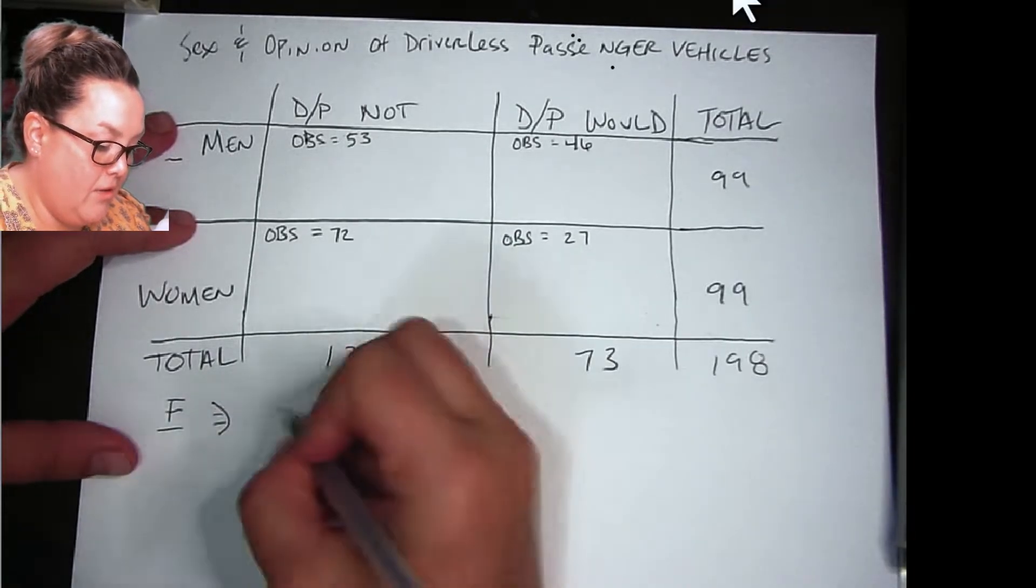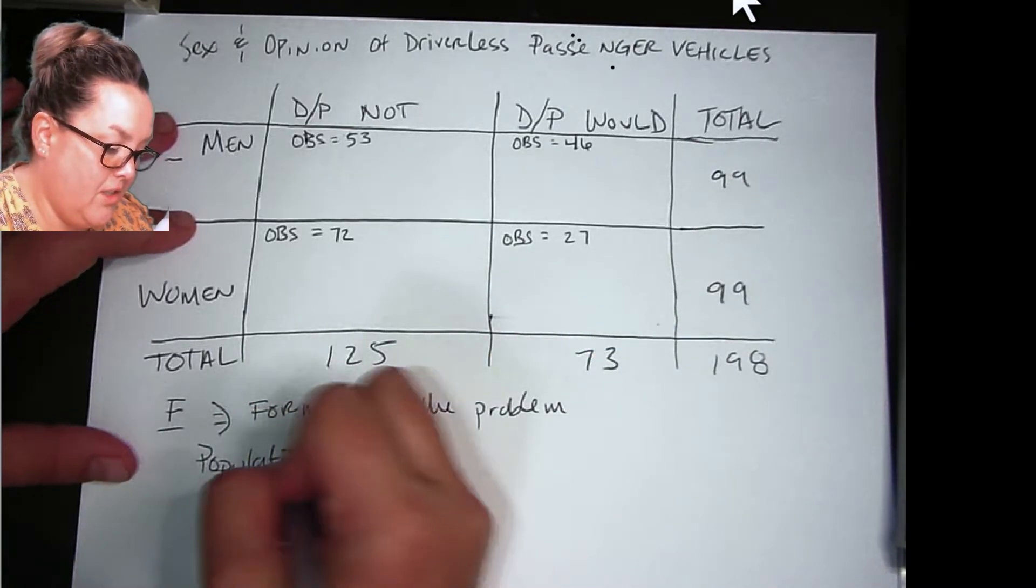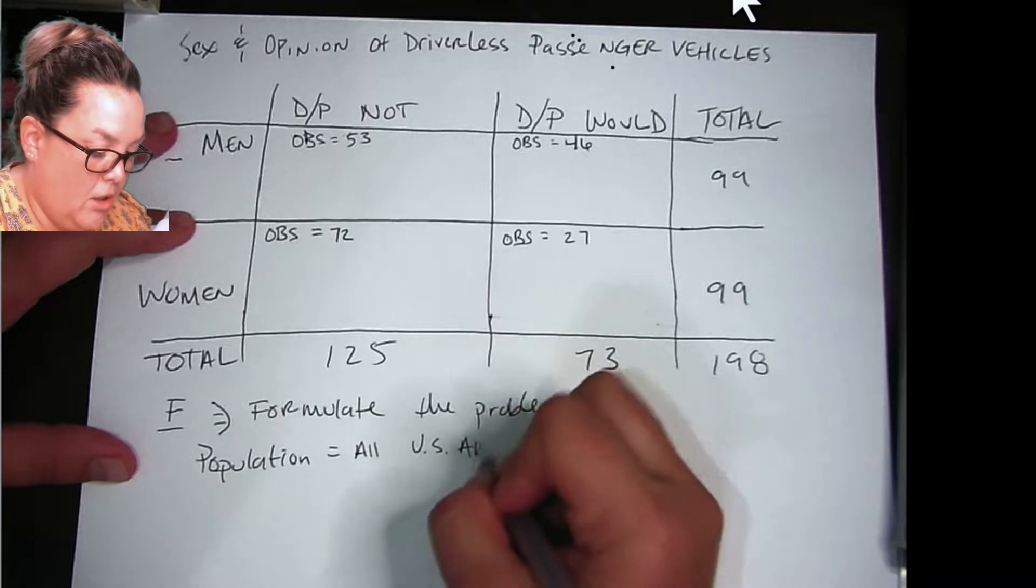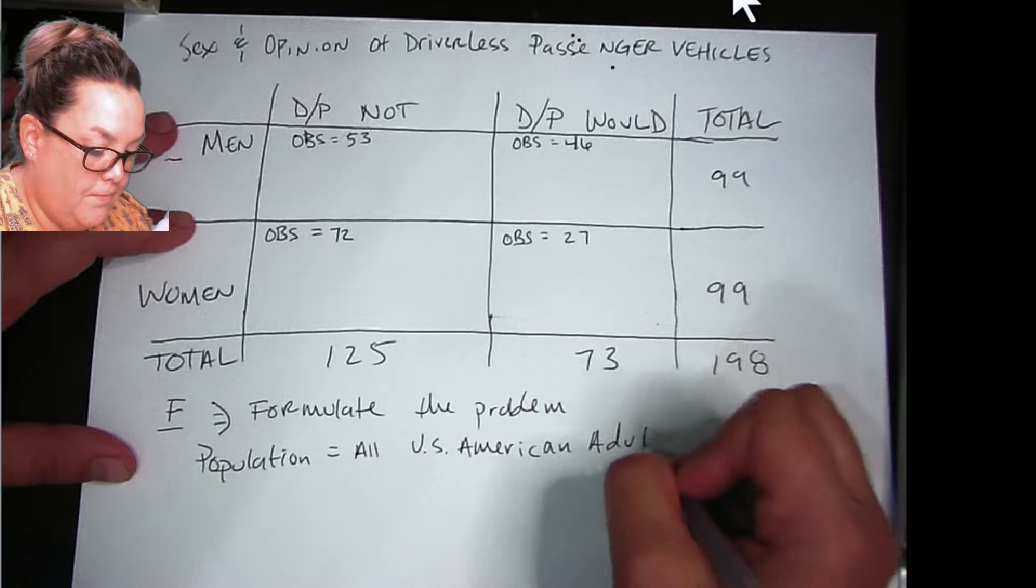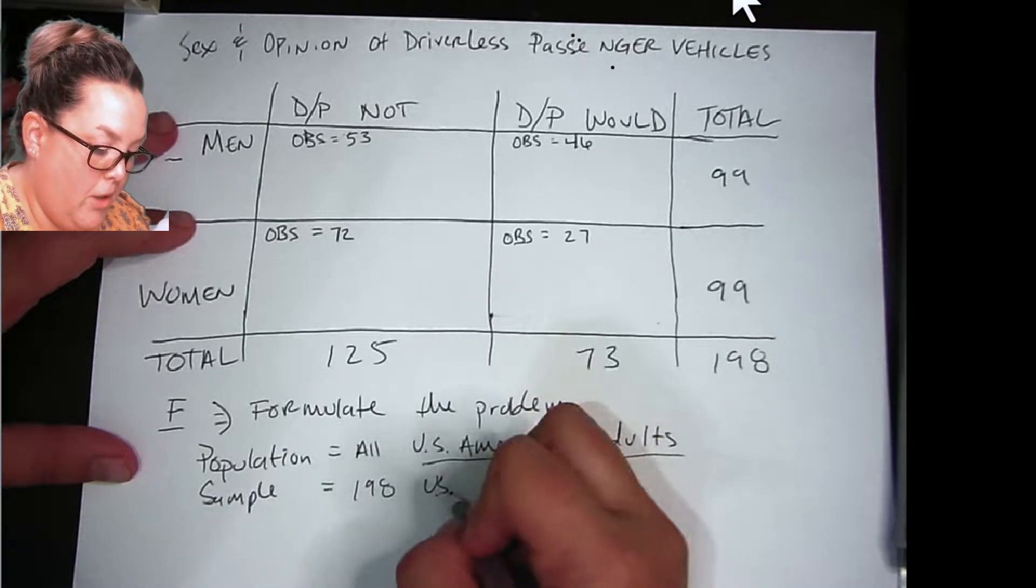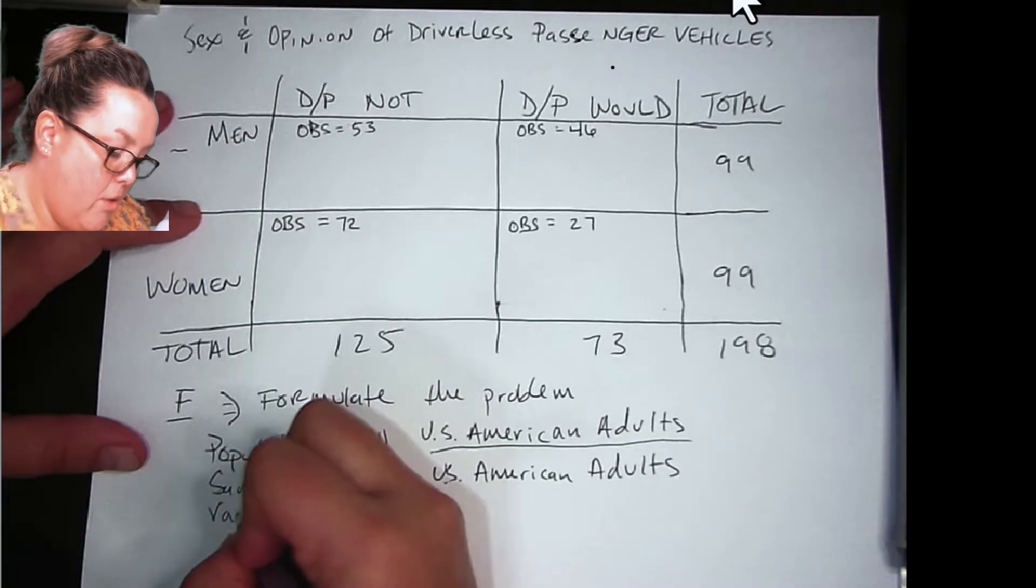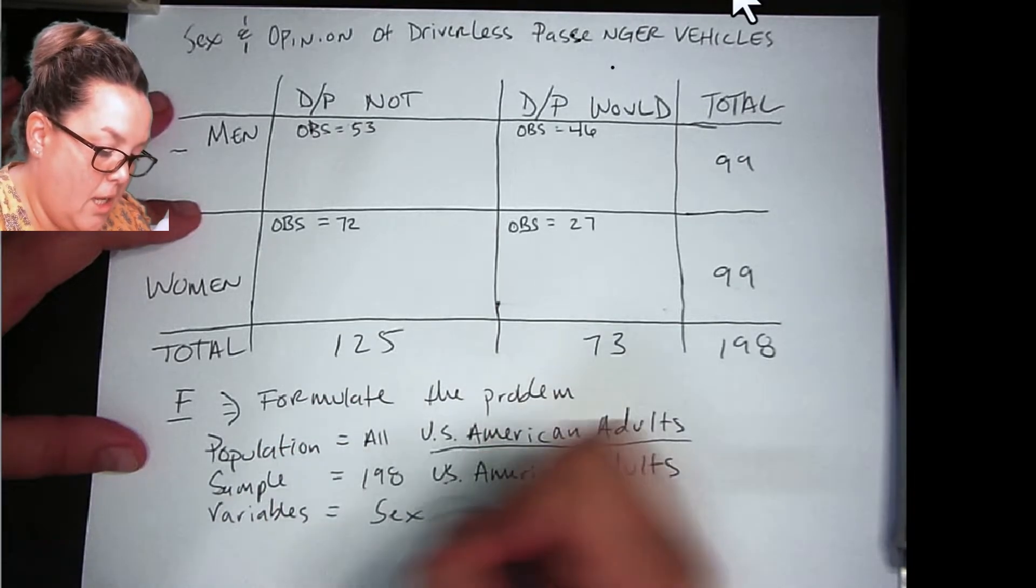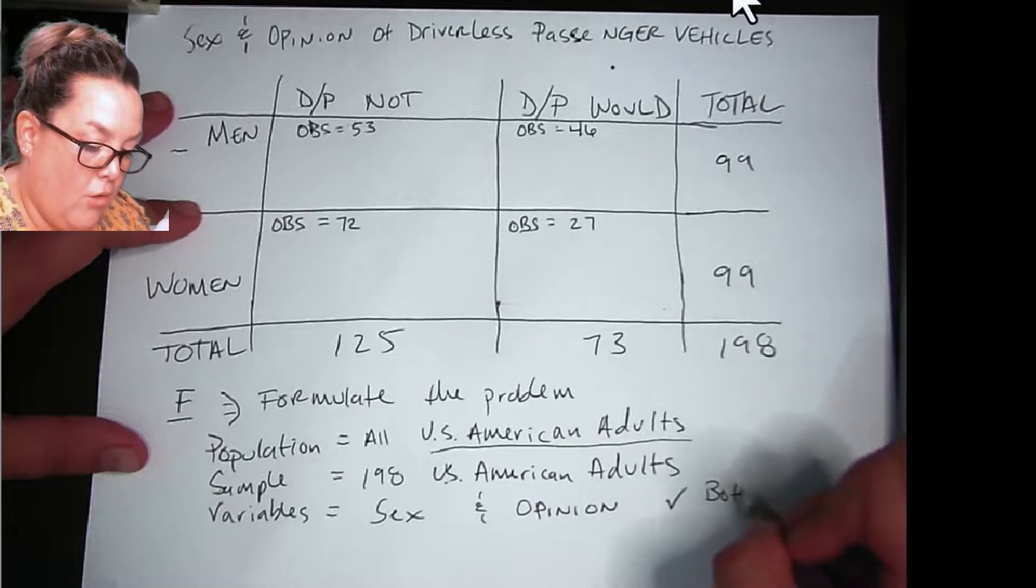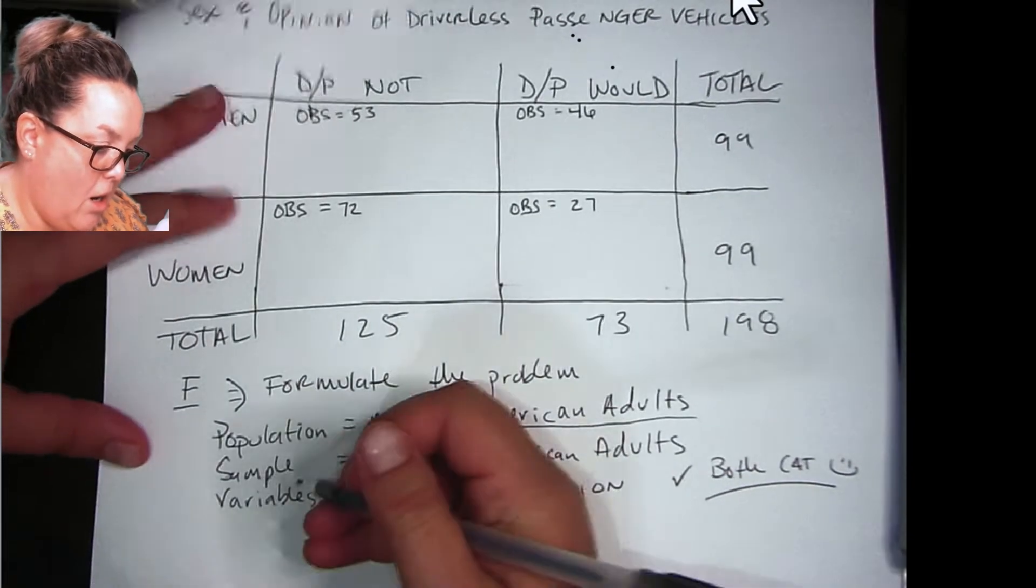So we're going to start with F, which remember is formulate the problem. The first step is the population. So this was data collected from the Pew Research Center, so this would be all US American adults. Our sample is 198, and remember you use the same group, it's just smaller, so we just say the size instead of all. Then we ask about the variables, and here we have sex and opinion, and we have to check that they're both categorical, and they are. So we're good.